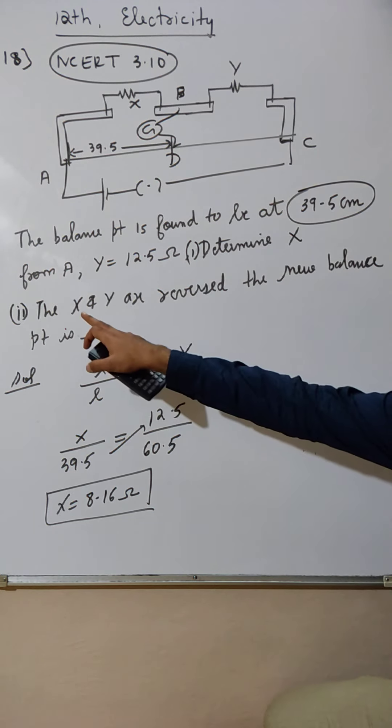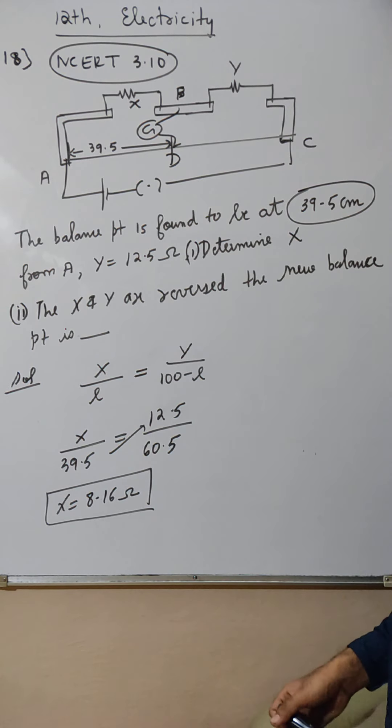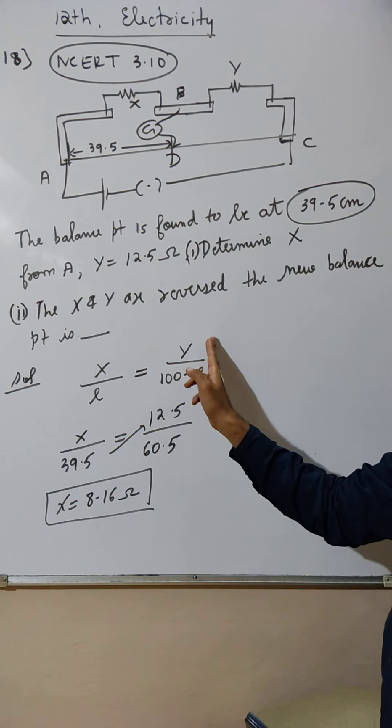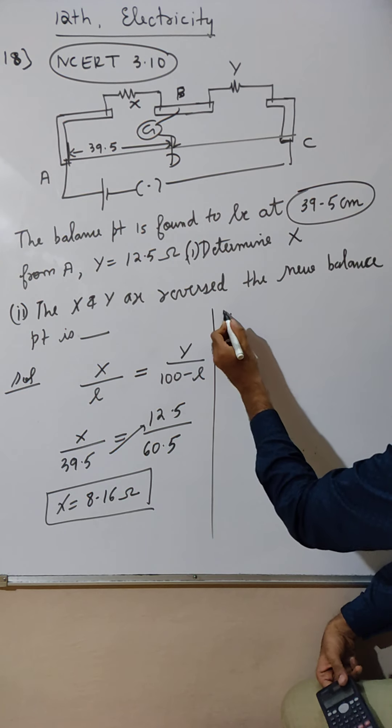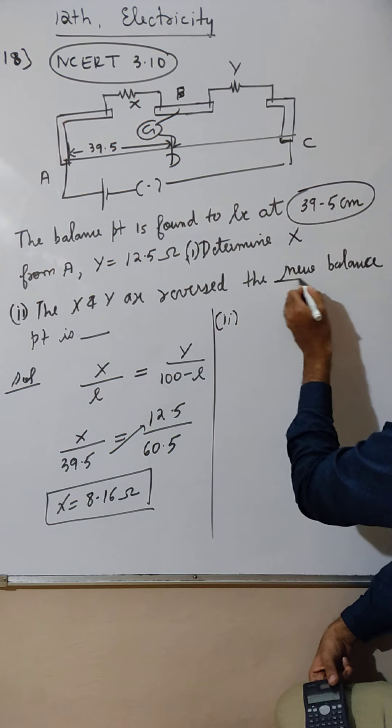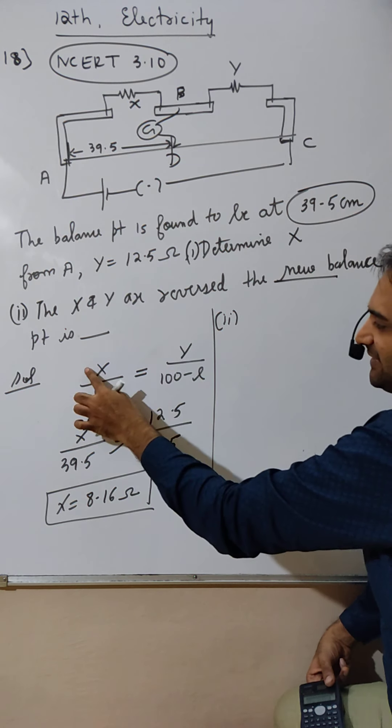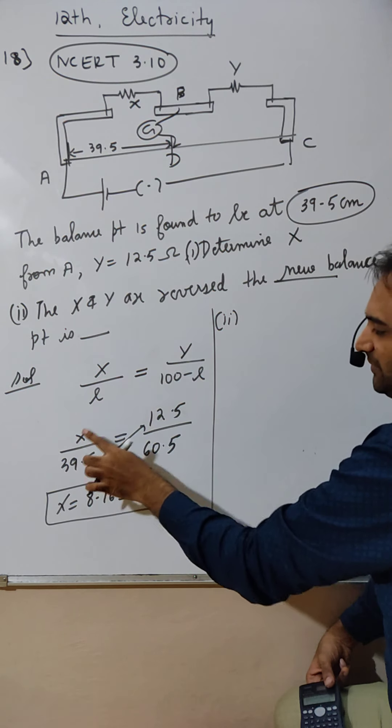Second part: X and Y are reversed. X's place Y came, Y's place X came. Case 2, X and Y are reversed. Then the new balance point is - where X was, Y goes, where Y was, X goes.